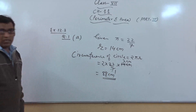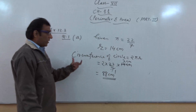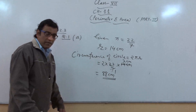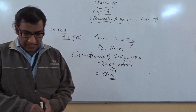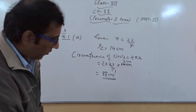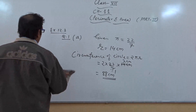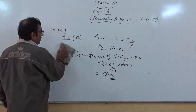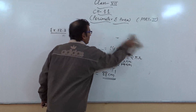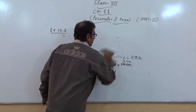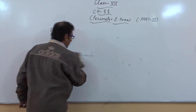So this is the way of calculating the circumference of a circle. This is the A part of question number one of exercise 12.3.